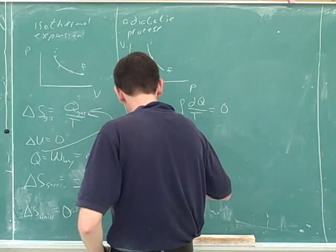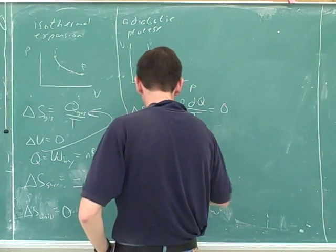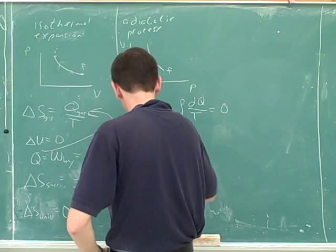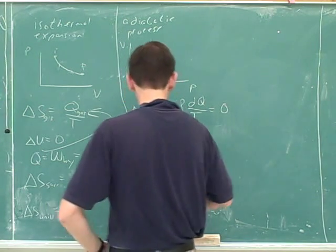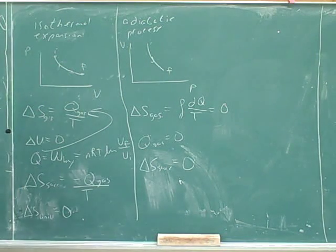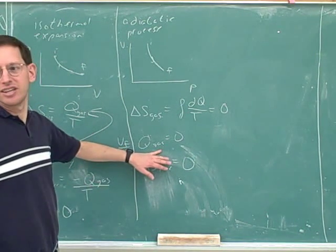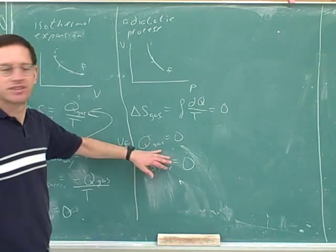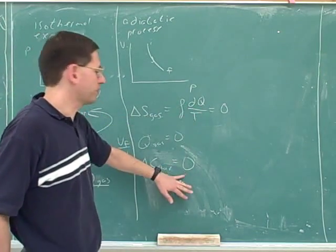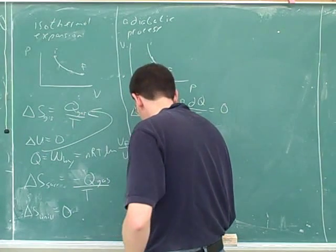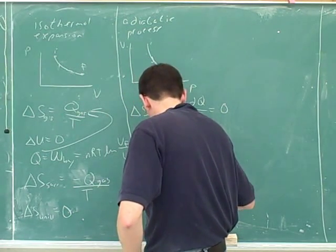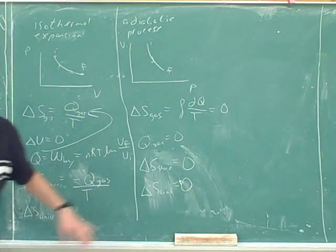So what would be the entropy change for the surroundings? Zero. For the same reason. Yeah. The gas is not gaining any heat, so the surroundings are not losing any heat. So using the same formula, this would be zero. And what's the entropy change for the universe? Zero. Because zero plus zero is zero.